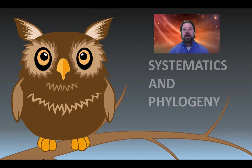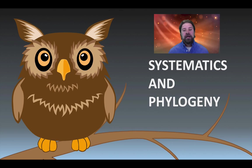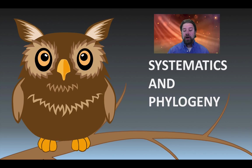Today we're going to take a look at how we classify living things. Nowadays that is done through what we call systematics and phylogeny. First we're going to look at why there's a need to classify living things, and then how systematics and phylogeny play their part.